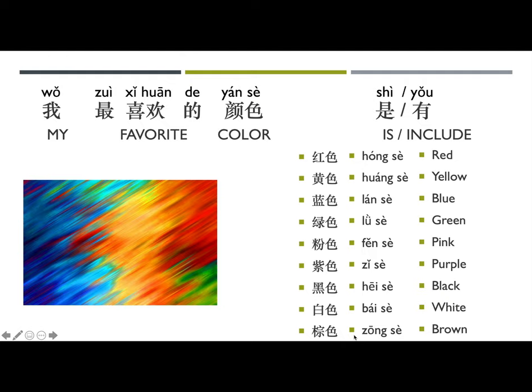Let's go through the colors: 红色 (red), 黄色 (yellow), 蓝色 (blue), 绿色 (green), 粉色 (pink), 紫色 (purple), 黑色 (black), 白色 (white), 棕色 (brown). What is your favorite color? Please comment down below.